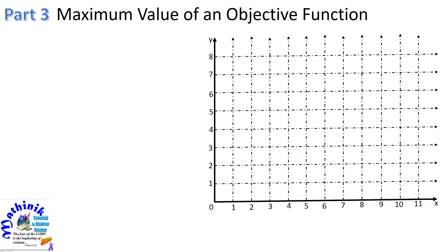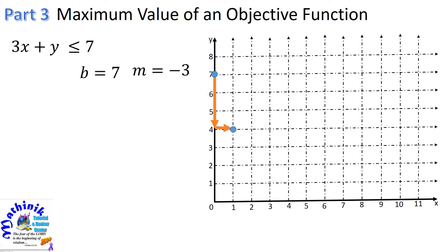Let us begin by graphing our constraints, the system of linear inequalities. First, we have 3x plus y is less than or equal to 7. Referring to our Part 1 review, we get the y-intercept and the slope so that we can graph the linear inequality. The y-intercept is 7, so we get the first point at (0, 7). Since the slope is negative 3, from our y-intercept we go 3 units down and 1 unit to the right to get our second point on the line. Constructing the line, we use the test point (0, 0) and get the shaded region as our solution to this inequality.